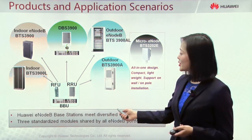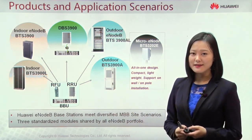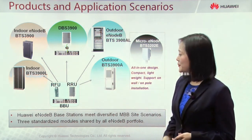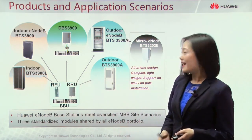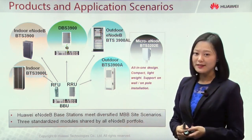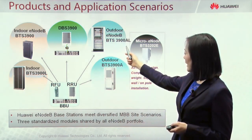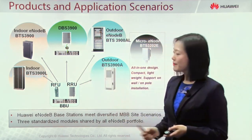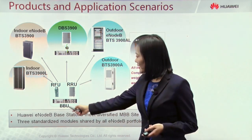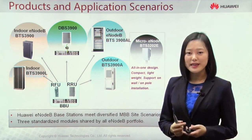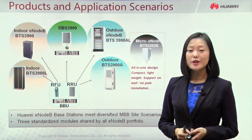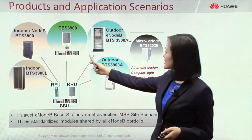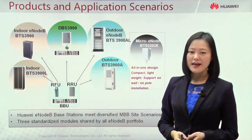This slide lists the main E0B products. These two E0B are indoor E0B: BTS-3900 and BTS-3900L. And these two are outdoor base stations: outdoor E0B BTS-3900AL and outdoor BTS-3900A. All four of these E0B are composed of BBU and RFU. BBU is the baseband processing unit and RFU is the radio frequency unit — they can be installed inside a cabinet. In the middle is the distributed base station, DBS-3900.